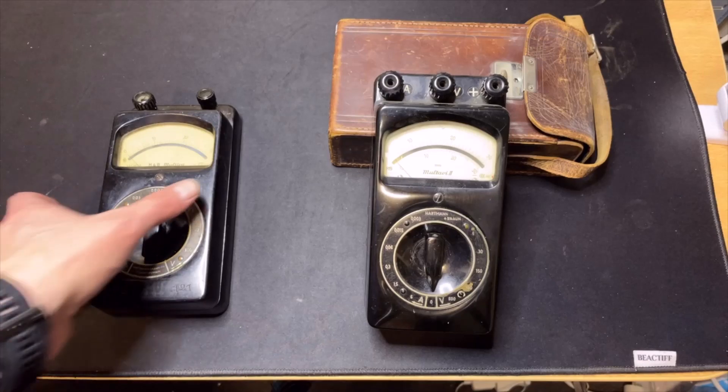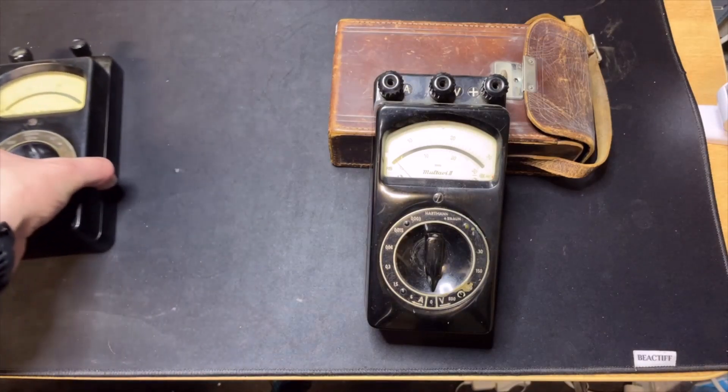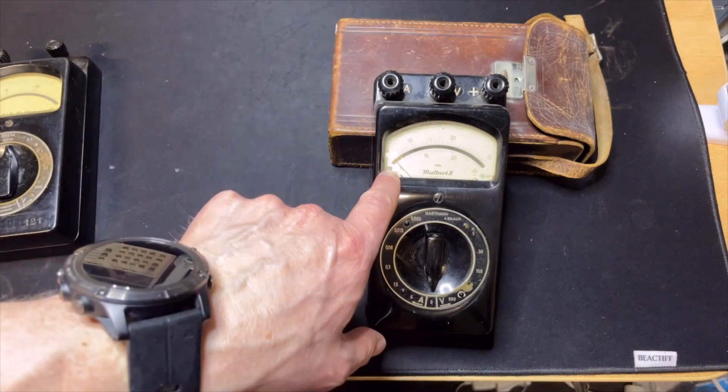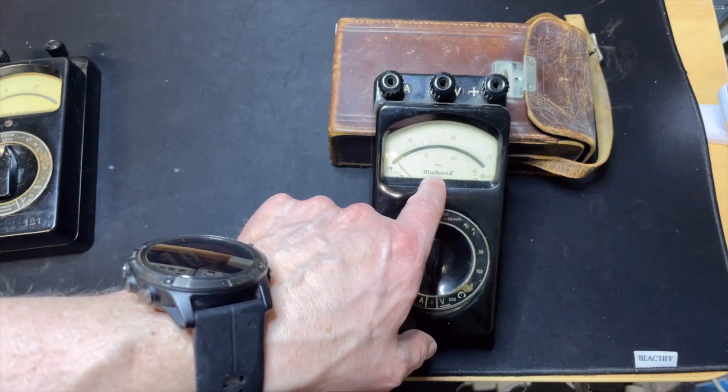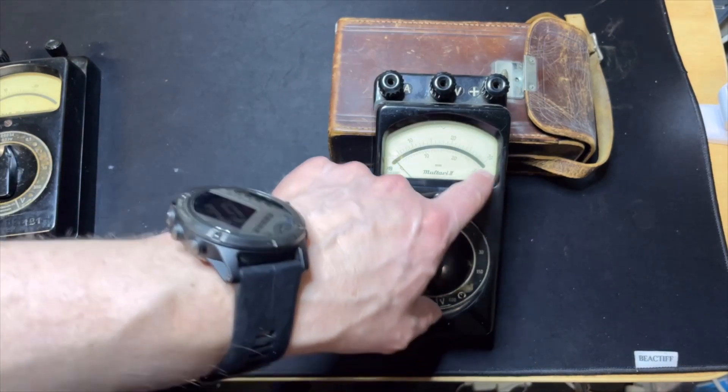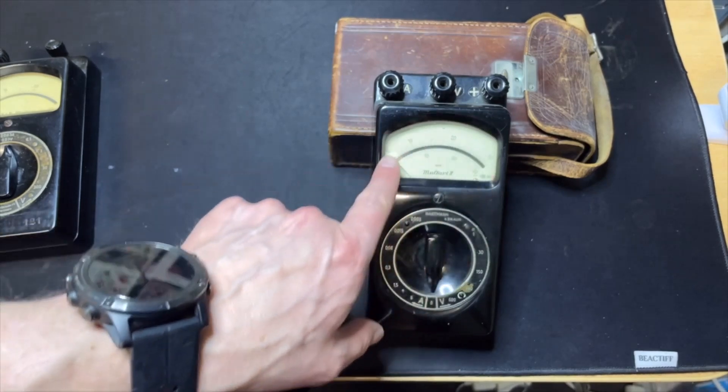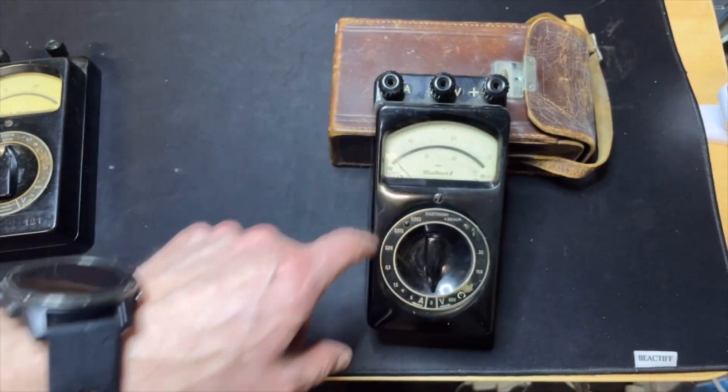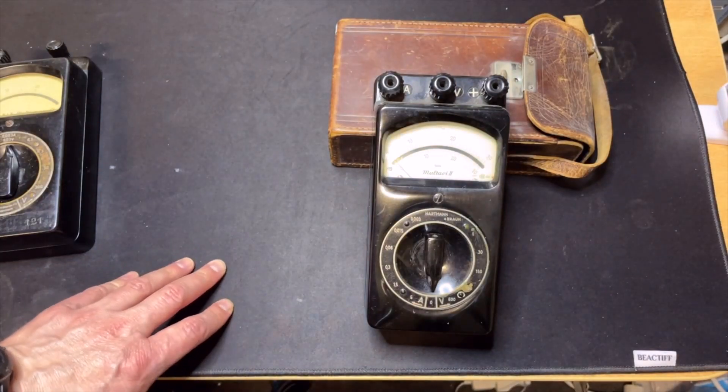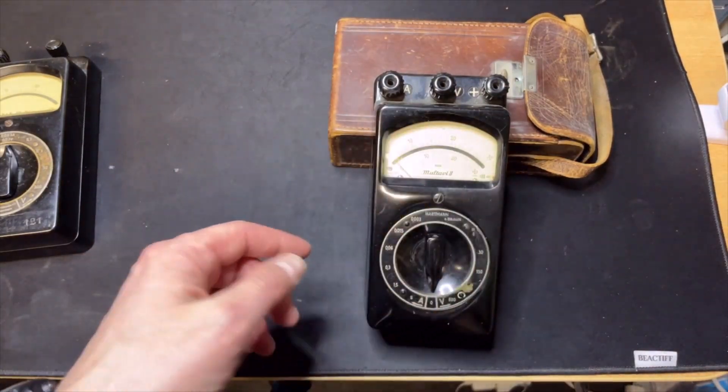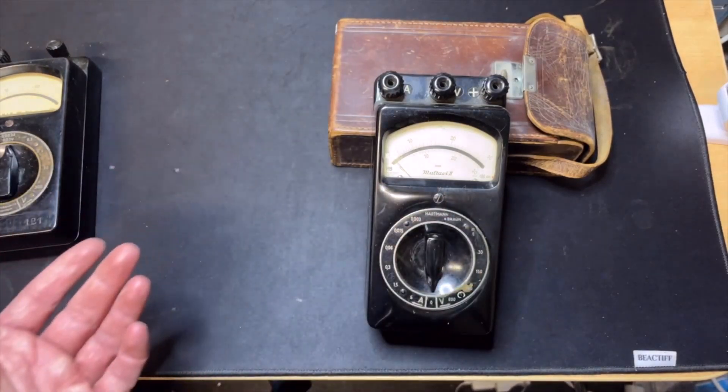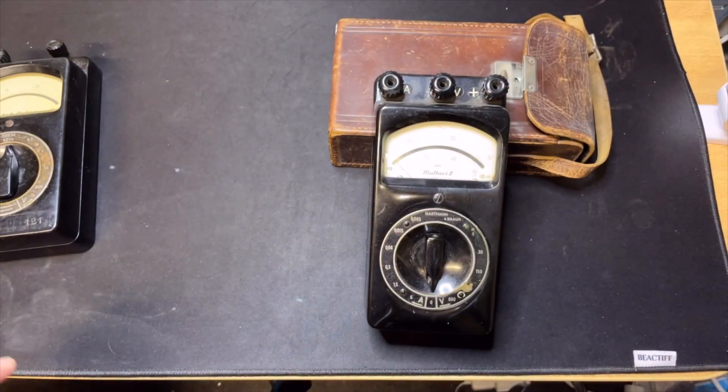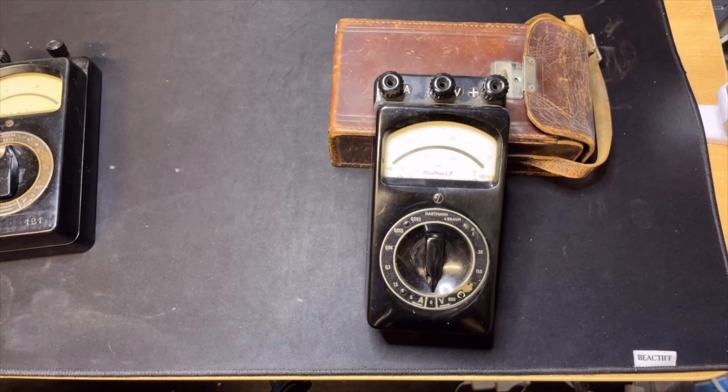Well, if you first look to the second one, it even says in the scale Hartmann Brown and Multavi number 2. The scale goes to 3, so that was already what they discussed later in Europe, that it would go always to the 3 and not to the 2 or all for the 4.